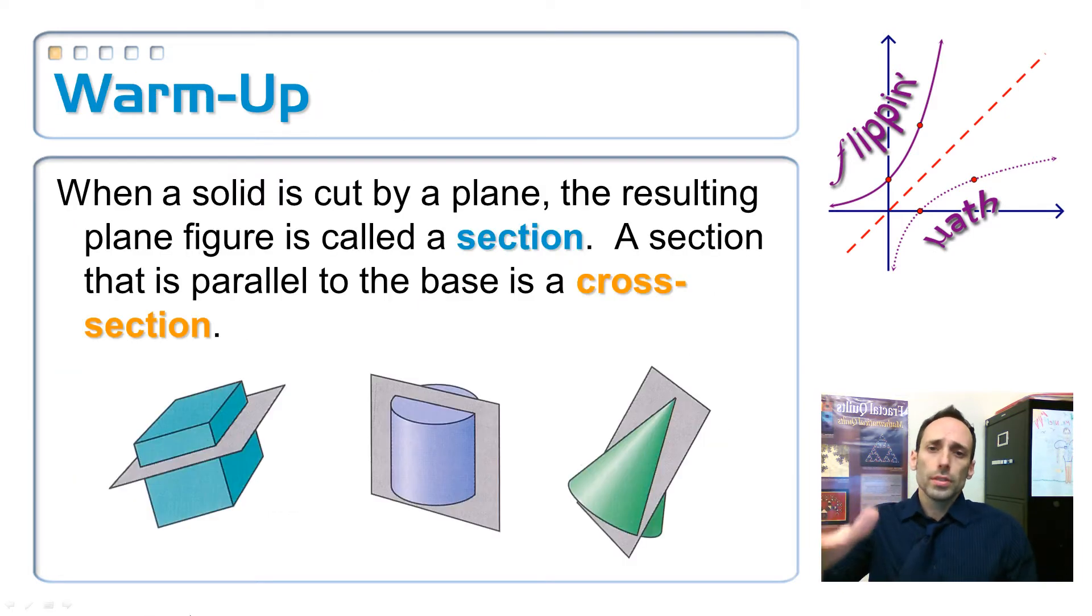So in this little warmup, it's just something from geometry. So in geometry, when you take a solid shape, three-dimensional shape, and you cut it with a plane. So just look at those three pictures right there. You're slicing it with a plane. It leaves a two-dimensional shape on that plane. That shape is called a section.